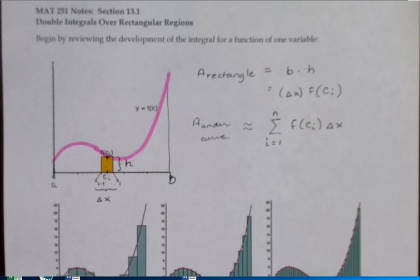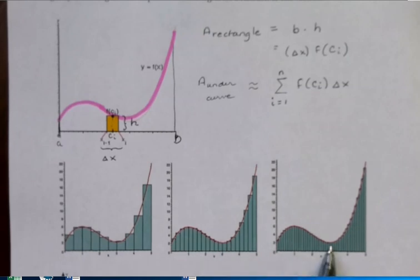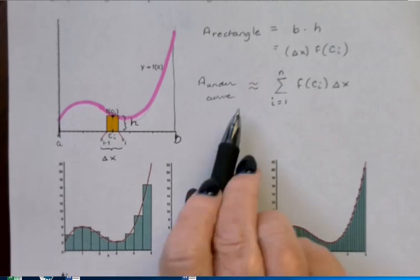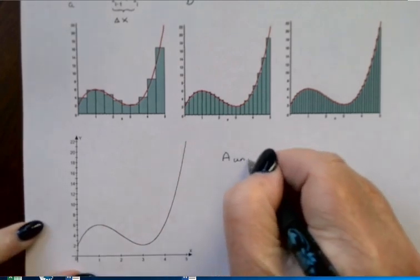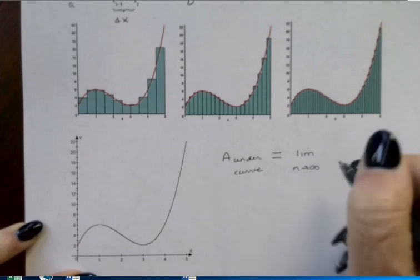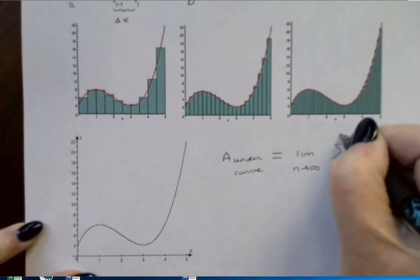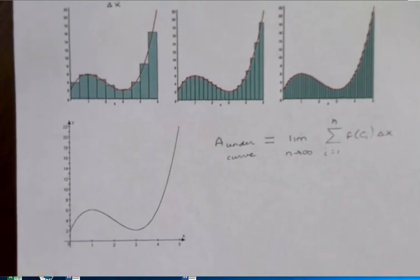The more rectangles you use, the better the approximation gets. When you use just a few rectangles, there's a lot of error in the approximation. But when you use a lot of rectangles, the amount of error becomes very, very small. The best thing we could do is actually use infinitely many rectangles. So our next step was to take the limit as n went to infinity — going from an approximation to the exact value for the area under the curve. You probably fondly remember that as the Riemann sum from Calculus 1.